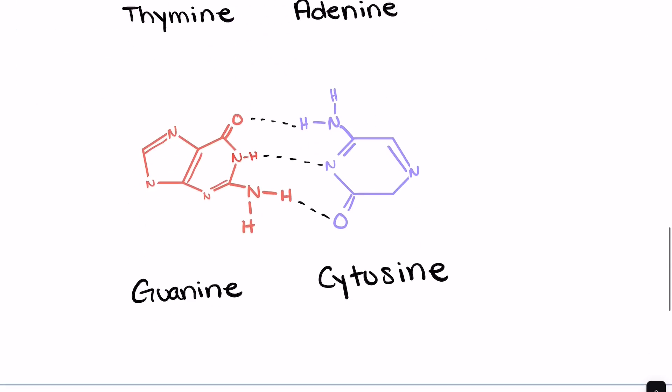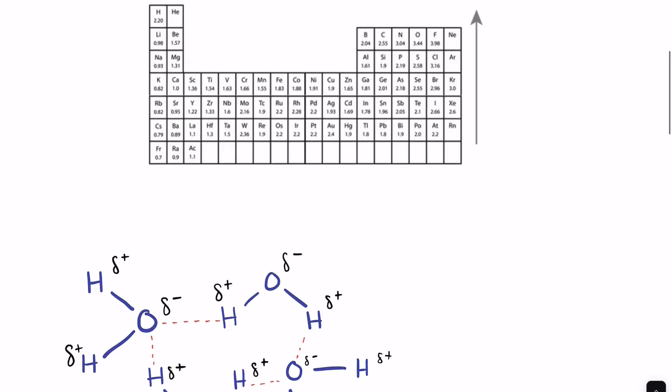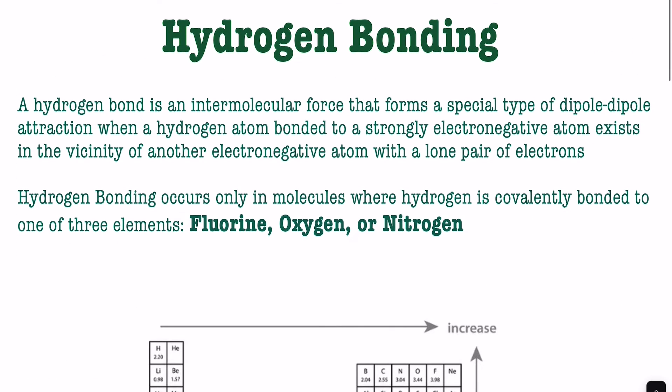So hydrogen bonding: a hydrogen bond is an intermolecular force that forms a special type of dipole-dipole attraction when a hydrogen atom bonded to a strongly electronegative atom exists in the vicinity of another electronegative atom with a lone pair of electrons. Now this is a big scary definition for something that is pretty simple.